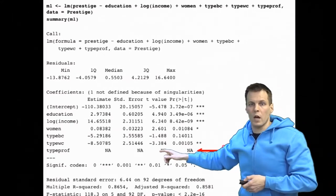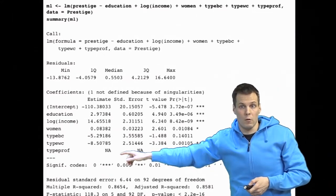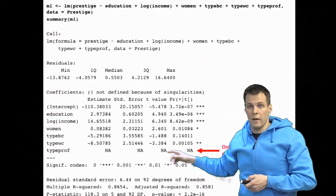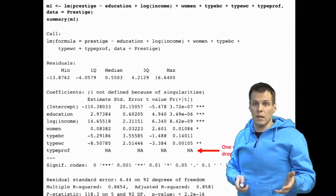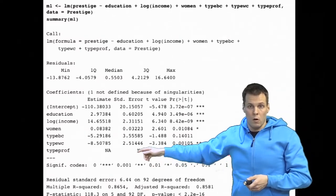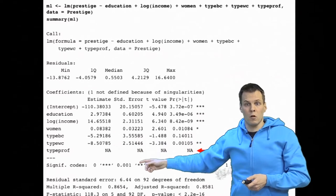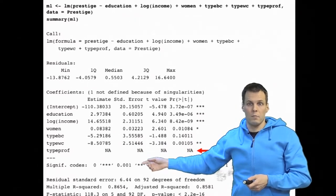So the estimate of type professional couldn't be estimated. And this is a very common behavior. You cannot estimate the regression model that includes all three dummies because of perfect collinearity. It's just mathematically impossible.